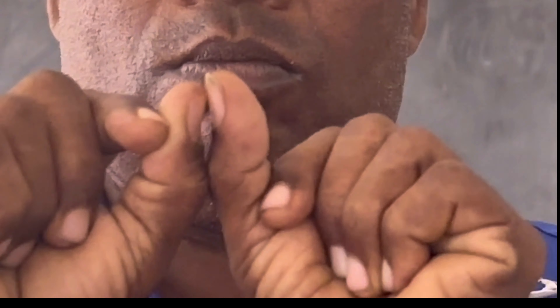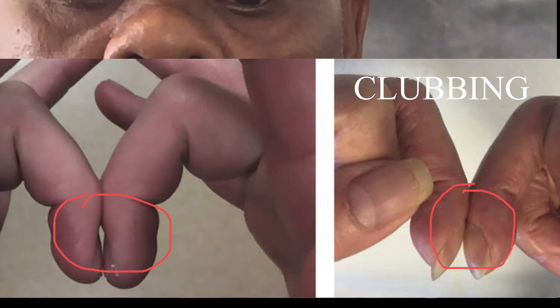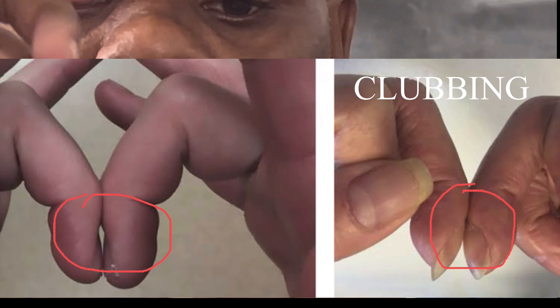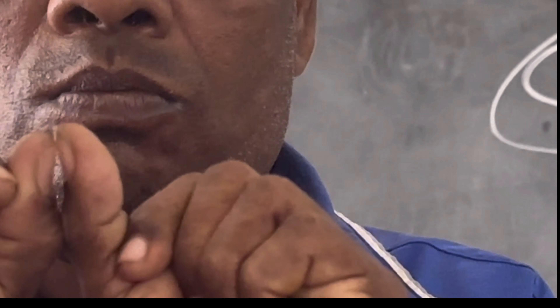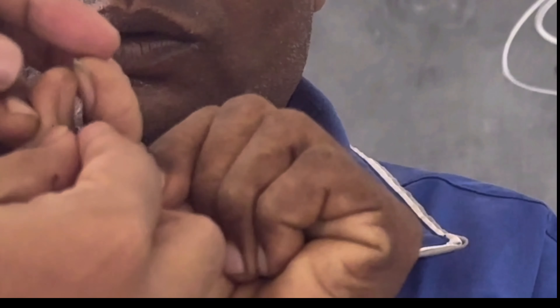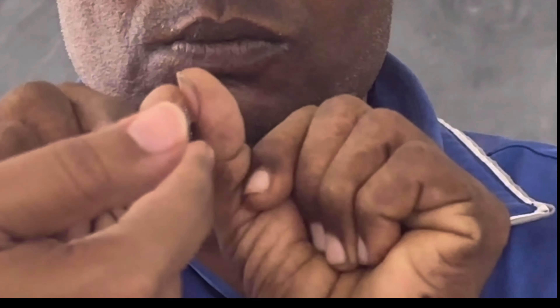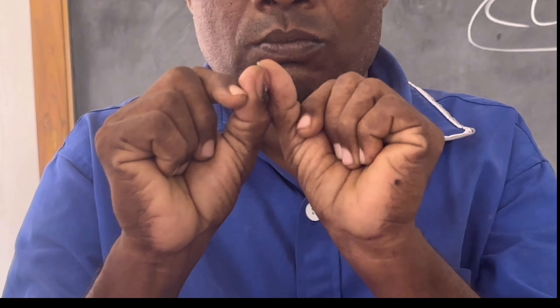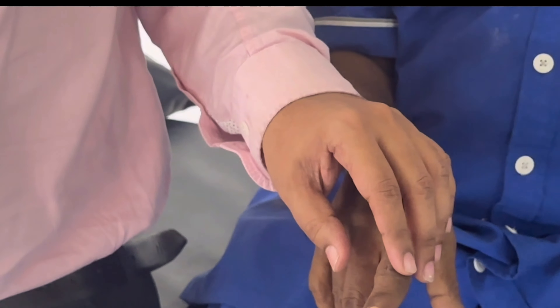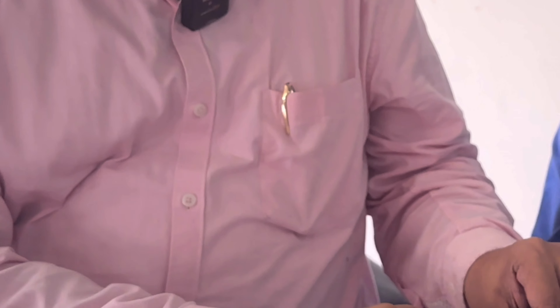In case if clubbing is there, this gap will disappear because there will also be soft tissue enlargement on that side. Both soft tissues will be joining together — both the bulbous enlargements will be touching each other and there will be no gap. But here, we are able to see the gap. Another important point: the normal angle between the nail and nail bed is less than 180 degrees.